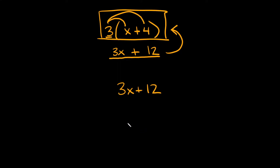In order to factor, you need to know what the greatest common factor is between your two terms. You have to figure out what is the biggest number or term that fits evenly into both terms — in this case, 3x and 12. The biggest number that divides evenly into both of them is 3.